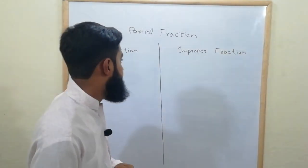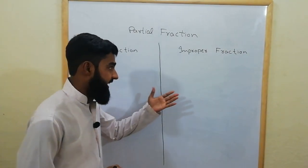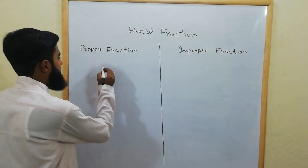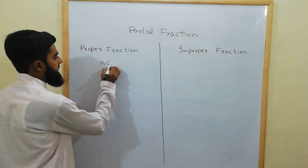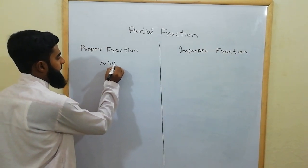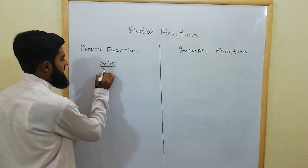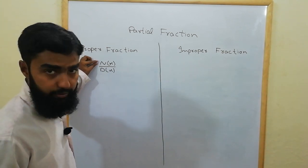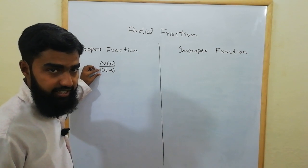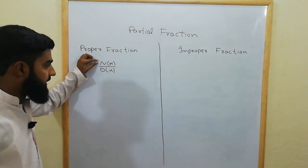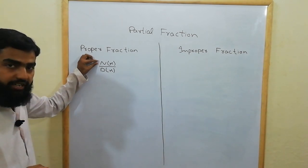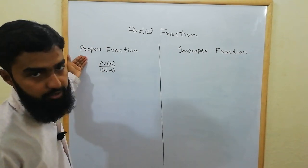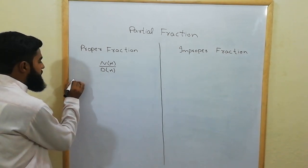The fraction of the form N(x) over D(x), where N(x) is the numerator and D(x) is the denominator — if the degree of the numerator is less than the degree of the denominator, then it is called a proper fraction.